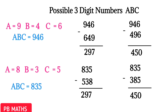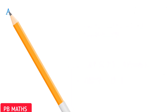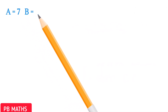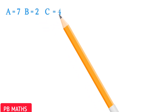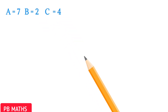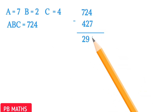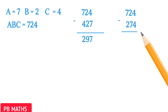In the third case, let's substitute A equals 7. Then B becomes 2 and C becomes 4. So 724 minus 427 gives 297, and 724 minus 274 gives 450. Case 3 also satisfies.